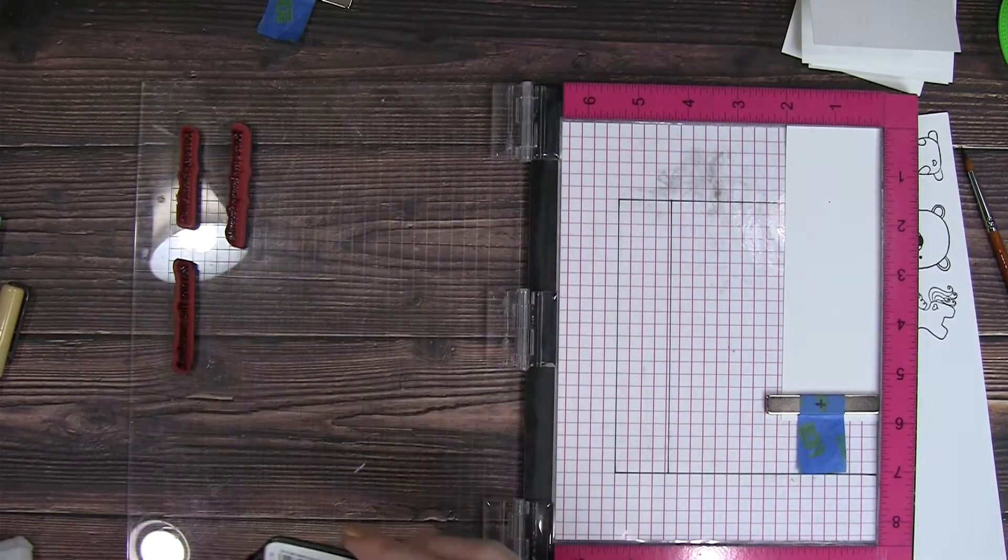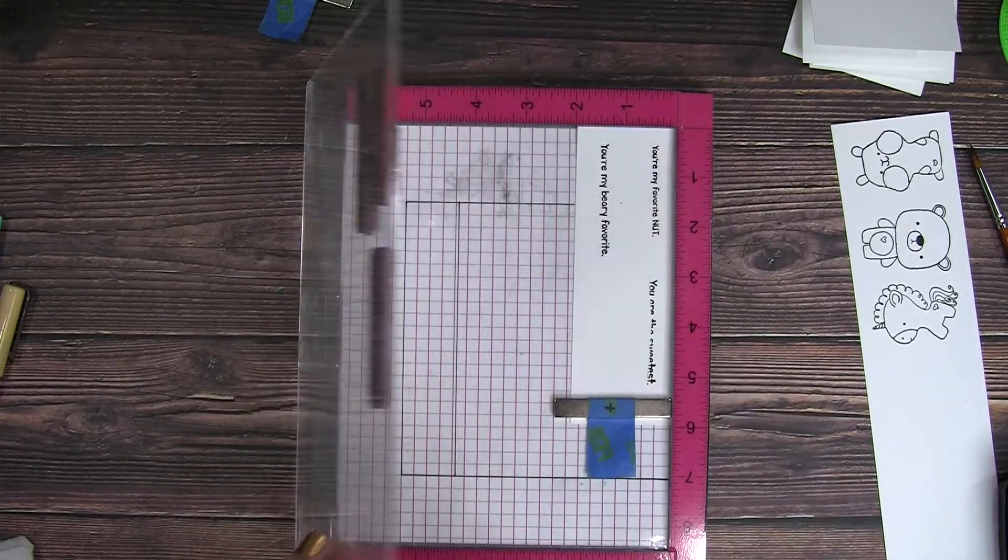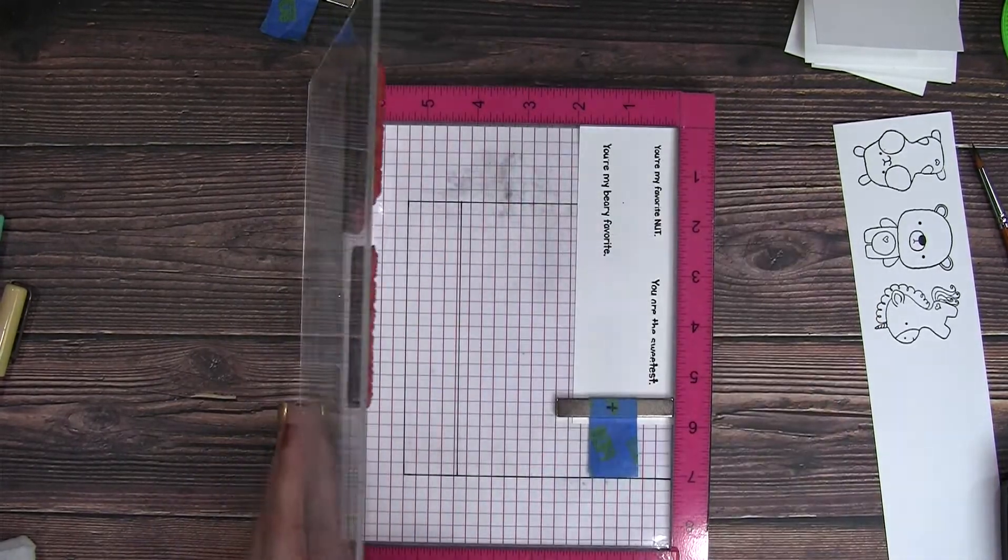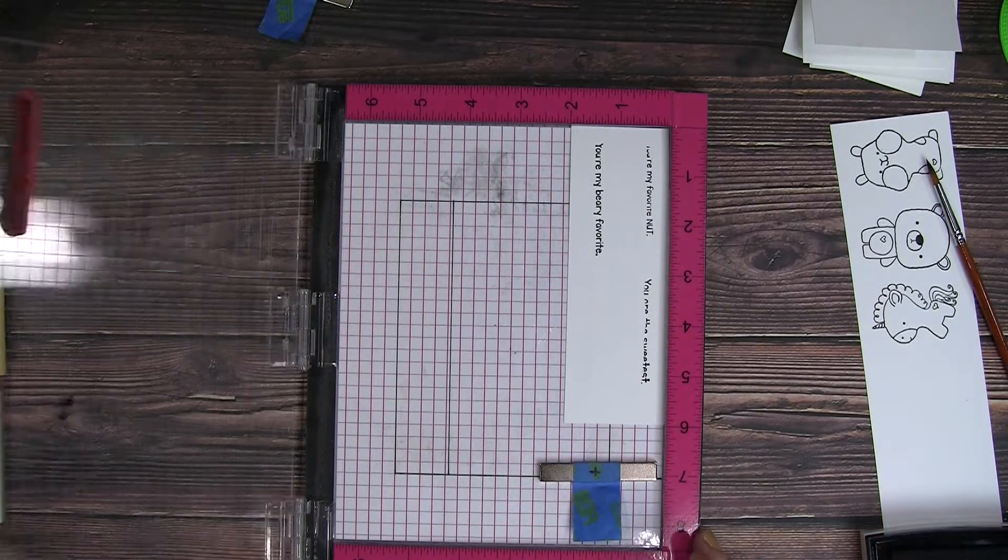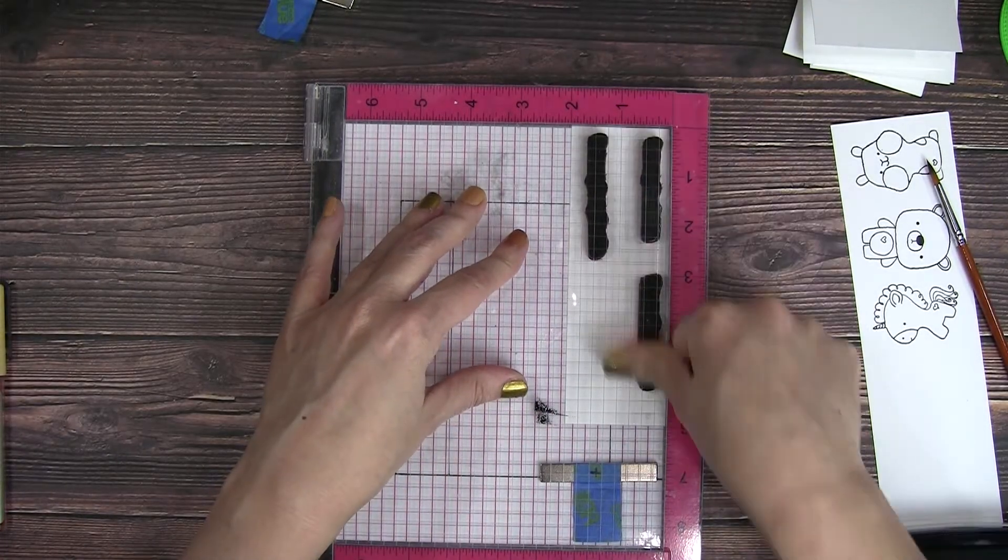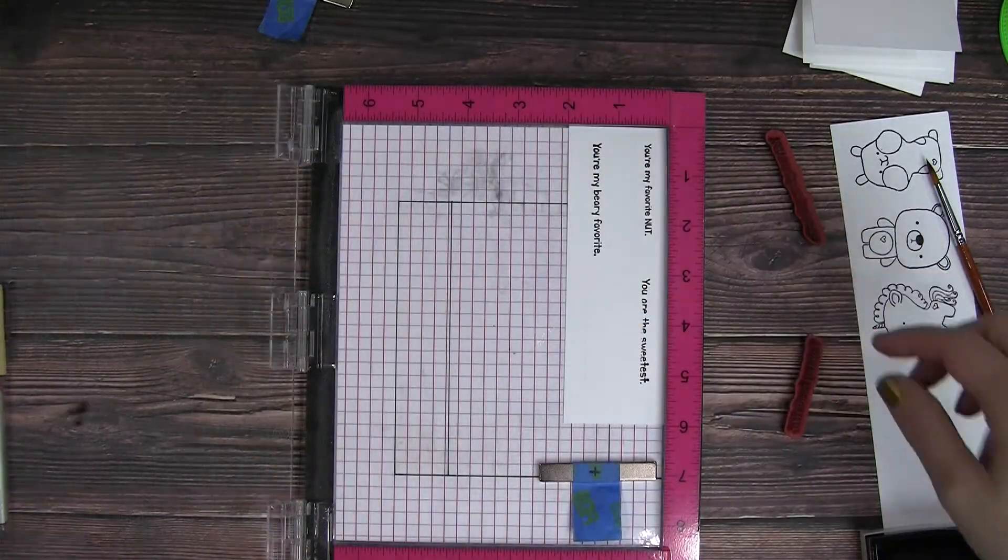Then I lined up all my sentiments on another piece of that scrap paper and stamped those down. One of my sentiments had a hard time stamping and I realized it was because of that magnet, so I just moved that out of the way and then I got a perfect impression once I did that.